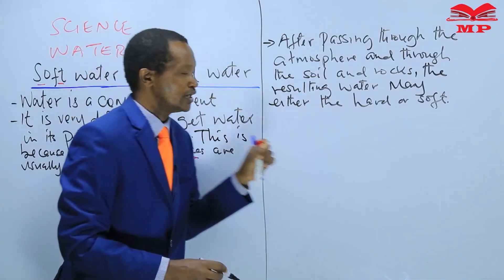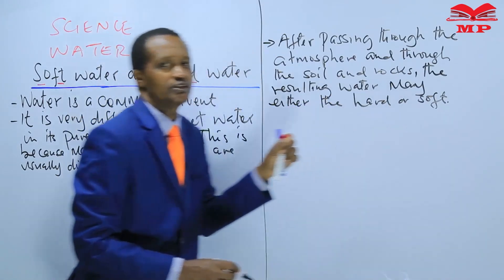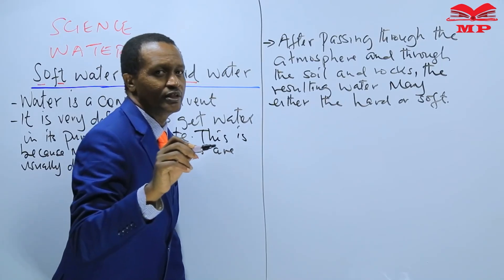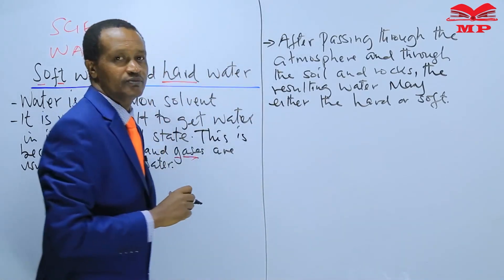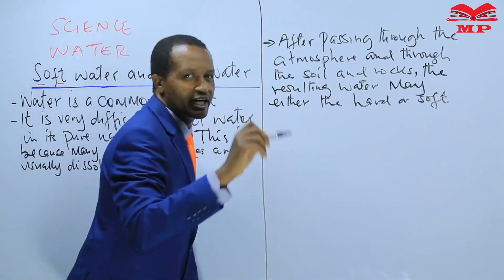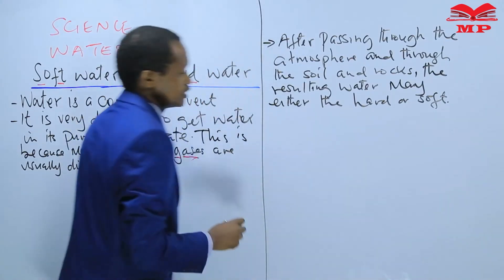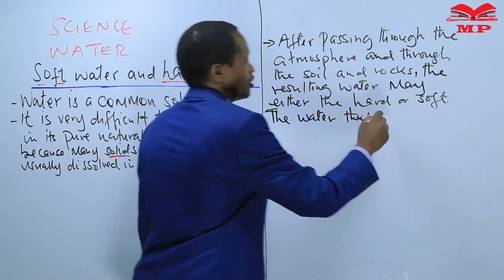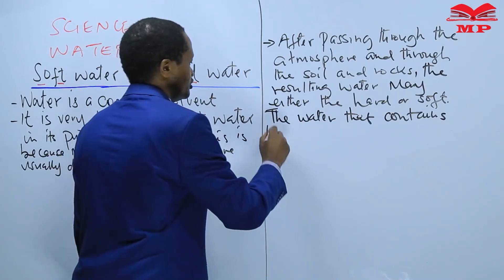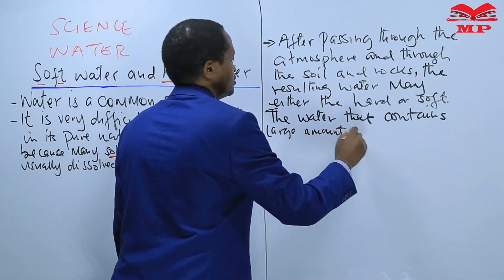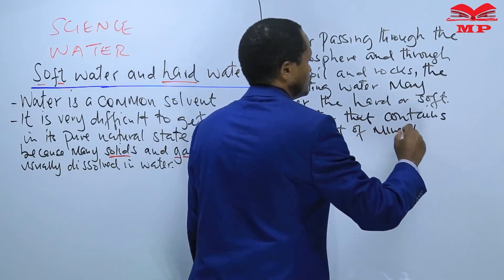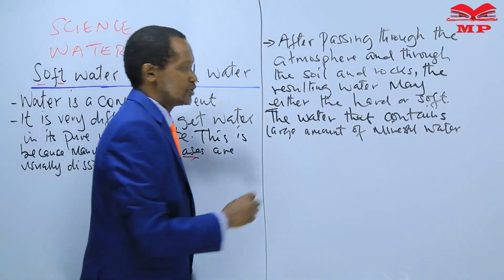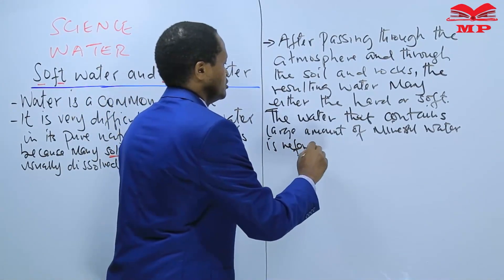Now, how do we distinguish hard water from soft water? The water that contains large amounts of dissolved mineral salts is referred to as hard water.